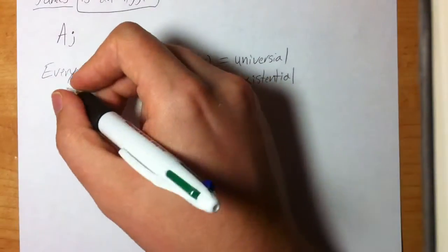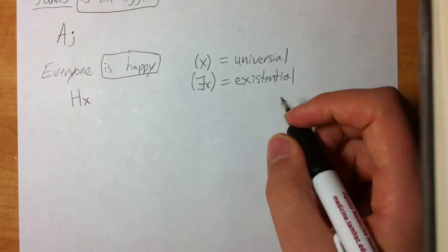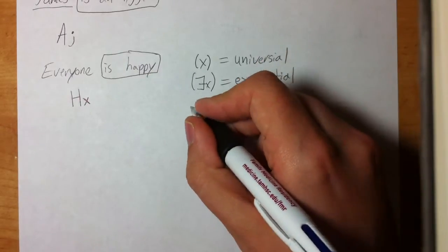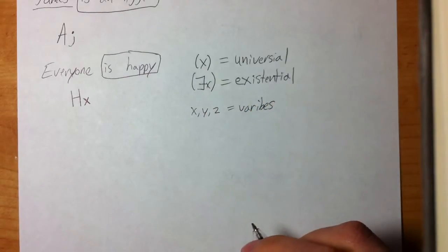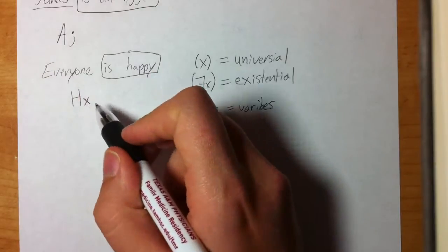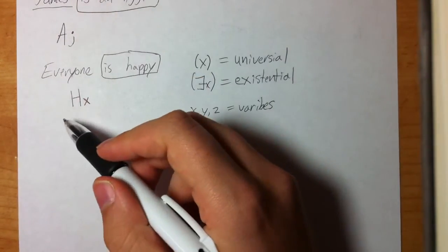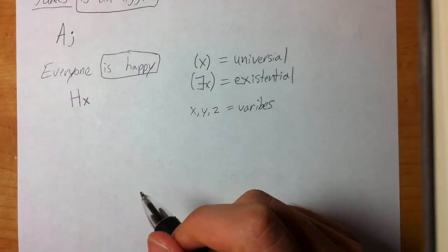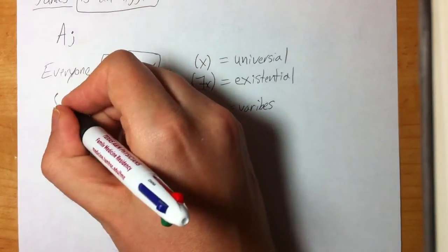Instead, we say Hx. We need to introduce two new concepts: quantifiers. We have the universal quantifier, which represents 'all,' and the existential quantifier, which represents 'some.' We use these in place of unknown names. We also have variables — lowercase x, y, z — which in this class stand for unknown names, just like in math class they stood for unknown numbers. Each variable stands for some name or every name, and which it is depends on which quantifier we're using.